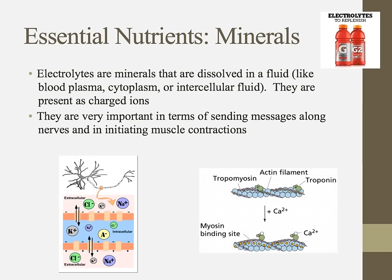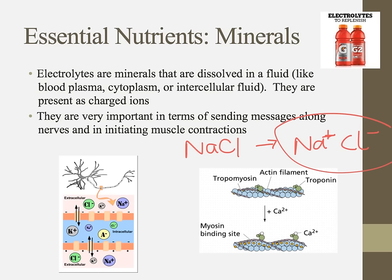One class of minerals you often hear about are electrolytes. It sounds fancy, but you don't need a special drink to get them. Electrolytes are simply minerals dissolved in a fluid — like blood plasma, cytoplasm, or intracellular fluid — present as charged ions. When ionic compounds dissolve in water, we get ions, and those are electrolytes. They're important for things like muscle contractions, which need calcium, and for action potentials involving sodium and potassium ions.